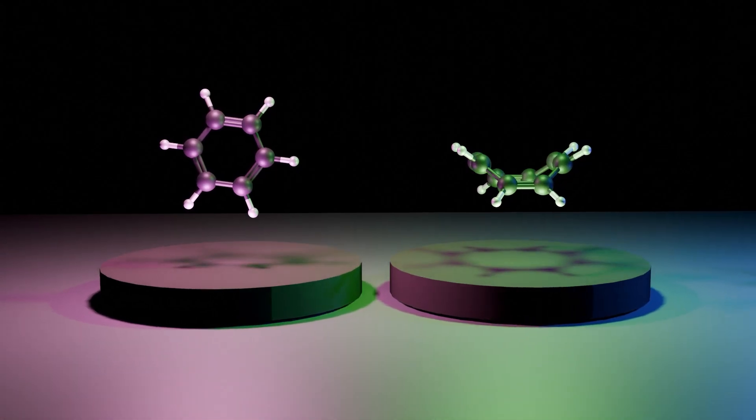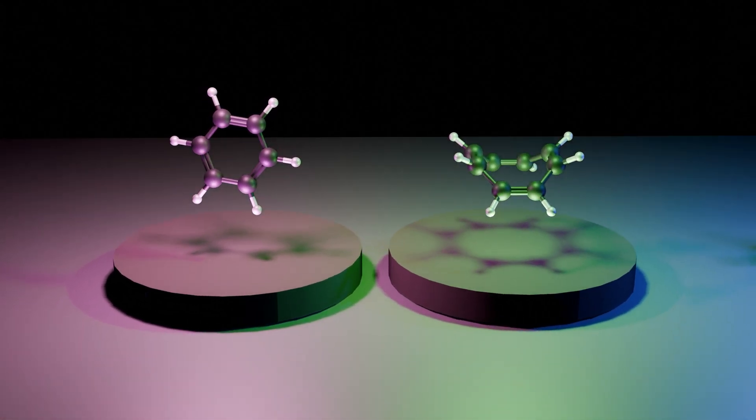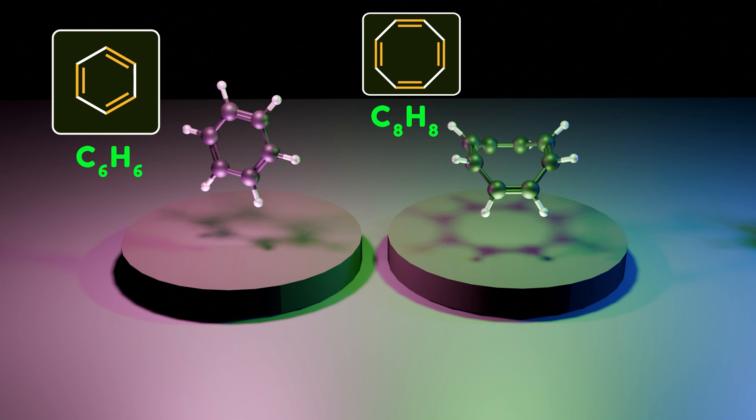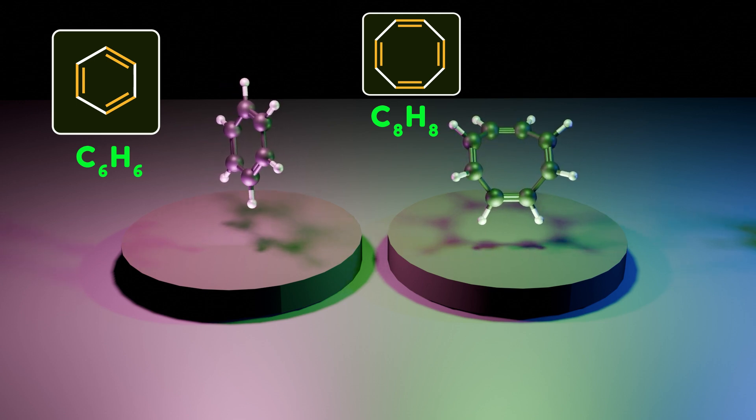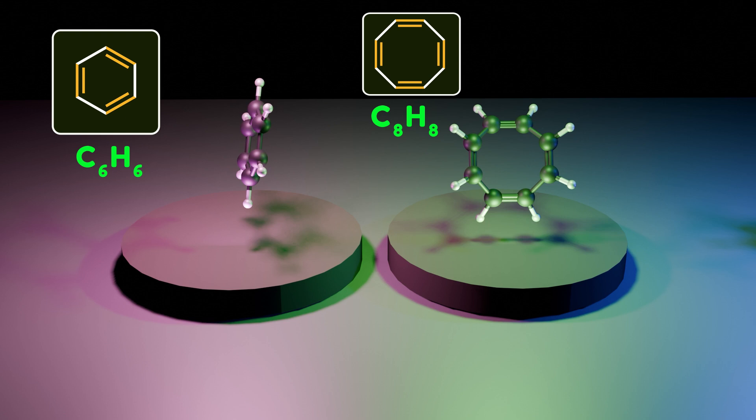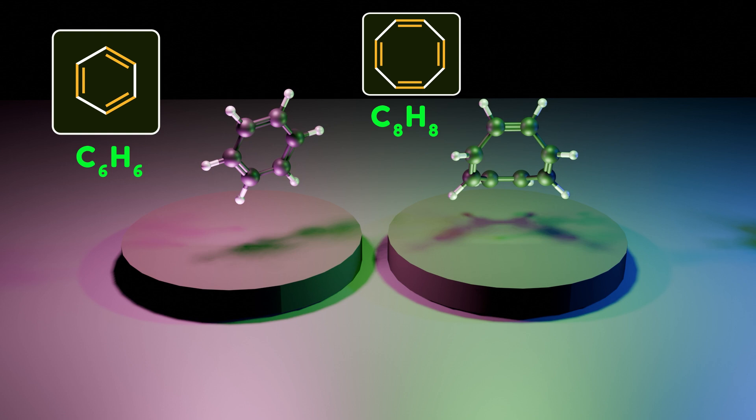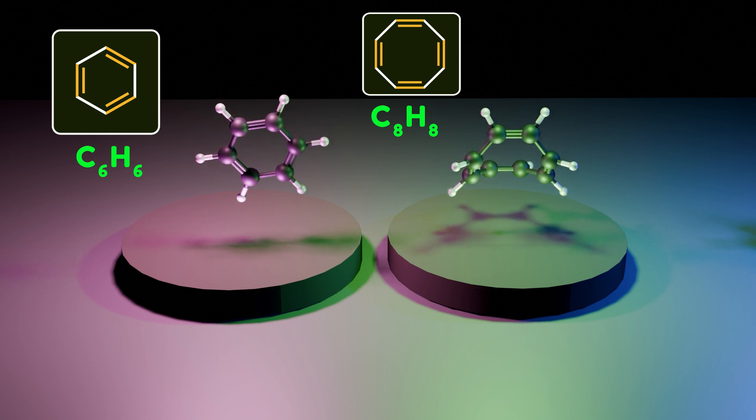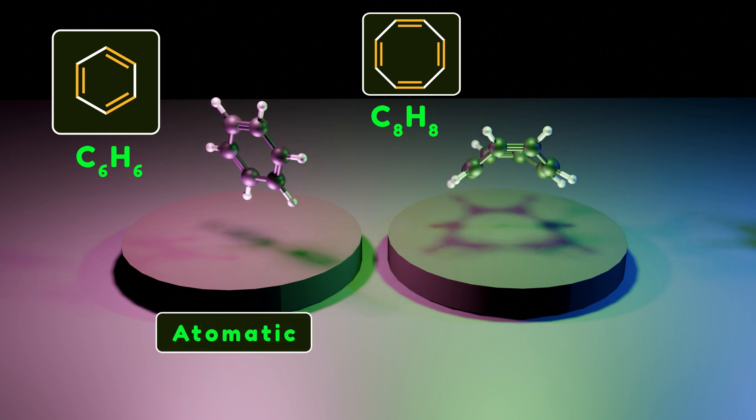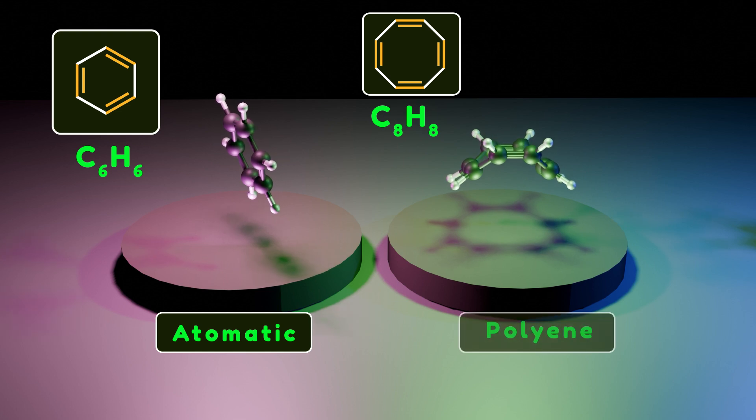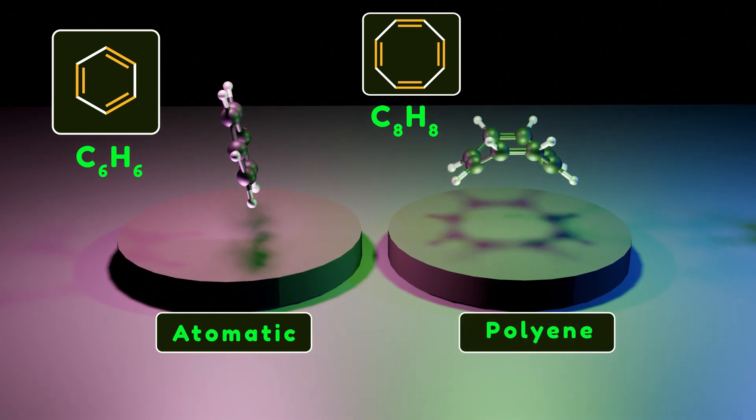Hello everyone, it's Chemikator, welcome back to my channel. Benzene and cyclooctatetraene are familiar examples of how the properties of a compound give information about its molecular structure. Although both are represented as a cyclic array of alternating double and single bonds, we interpret this representation quite differently.